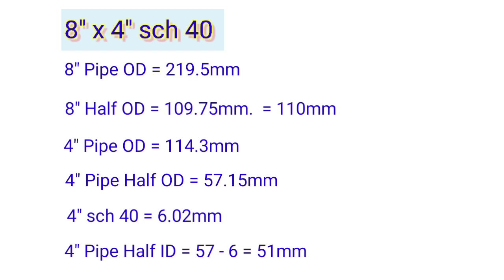4 inch pipe half OD is 57.15mm. As per schedule chart, 4 inch schedule 40 equals 6.02mm. So 4 inch half ID equals 57 minus 6, equals 51mm.